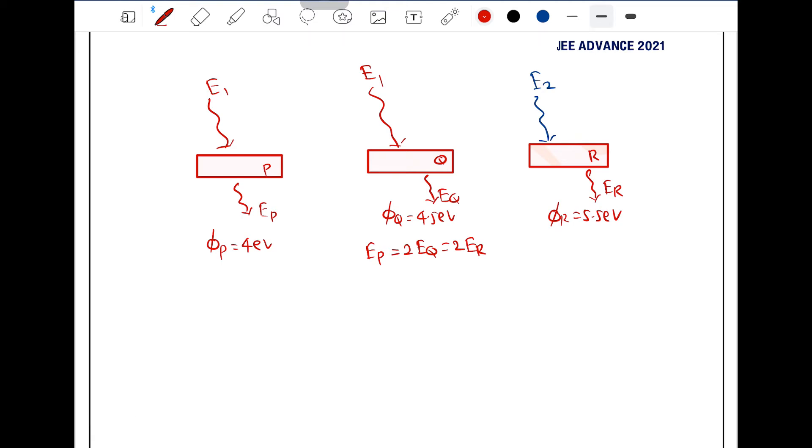Now what is the energy here? See, according to photoelectric equation, we can write energy incident can be written as work function plus kinetic energy.